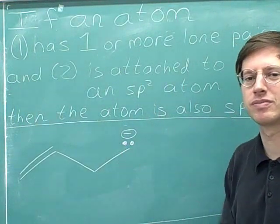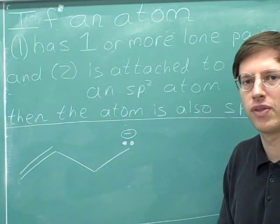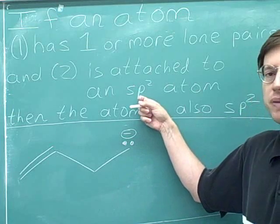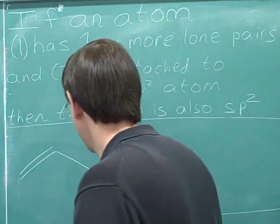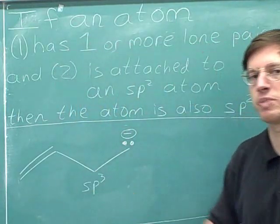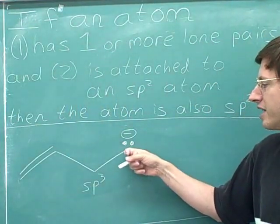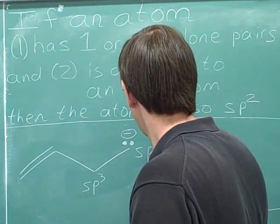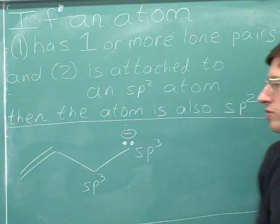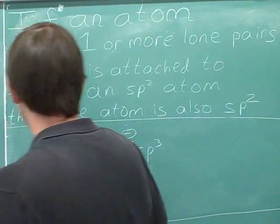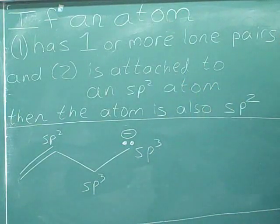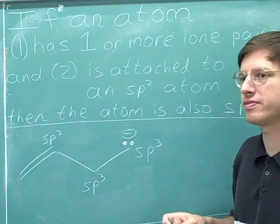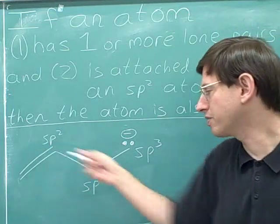What's the hybridization of this carbon? The exception does not apply here. We do have a lone pair, but this atom is not attached to an sp2 atom — it's attached to an sp3 atom. So the exception does not apply, and we just use our normal rule: this carbon is also sp3. It's true that there's an sp2 carbon nearby, but that's too far away. In order for this exception to kick in, the atom you're focusing on has to be directly attached to the sp2 atom — being attached to an atom that is itself attached to the sp2 is too far away.